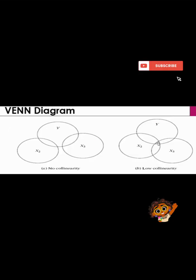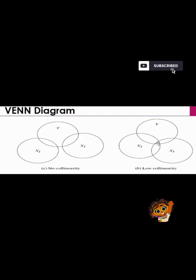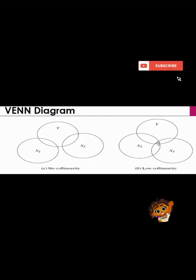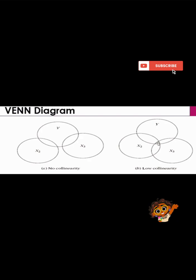In the Venn diagram you can see there are two types: Y is the dependent variable, and X1 and X2 are independent variables. In the first Venn diagram, X1 and X2 have no relationship between them. In the second Venn diagram, there is a relation between X1 and X2. In the first Venn diagram there is no collinearity, but in the second Venn diagram collinearity exists, and hence the violation comes.